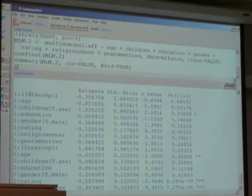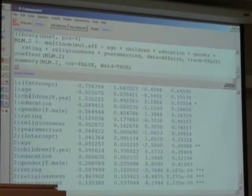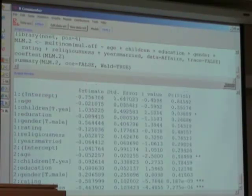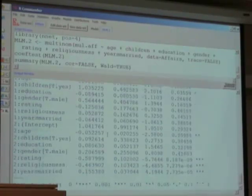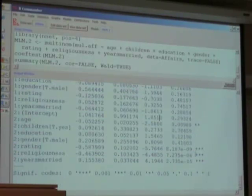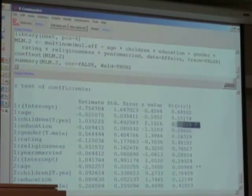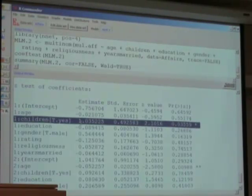Now see, zero is the base case. And we have two sets of coefficients. One set is for having an affair, and the other one is having at least two or more affairs. And you see that the significant coefficients are here, which you could tell from the stars. And having an affair versus not having an affair, in this case, in a multinomial logit, you see that having kids increases the odds of having an affair by three.